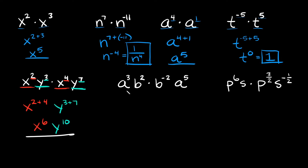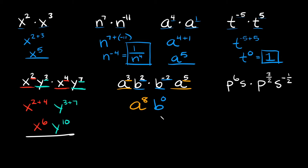Here we have a cubed b squared times b to the negative two times a to the fifth. Again, combine like terms. Multiply the a's: a cubed times a to the fifth — keep the a, and 3 plus 5 equals 8, giving a to the eighth. Then multiply the b's: b squared times b to the negative two — keep the b, and 2 plus negative 2 equals 0. Anything raised to the zero power equals 1, so b to the zero is 1. Then a to the eighth times 1 is just a to the eighth — that's your final answer.